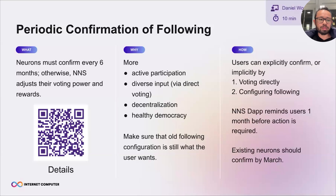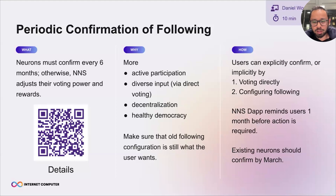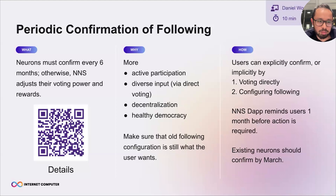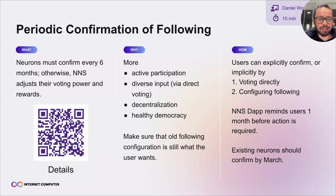So how can you maintain your voting power and rewards? I'll demo that in the next slide, but basically you click 'yes, I want to keep these followees' — that's the explicit and direct way of doing this. But you can also maintain your voting power and followees by voting directly, or simply by setting your following, which will be taken as an implicit 'yes, I confirm these followees.'